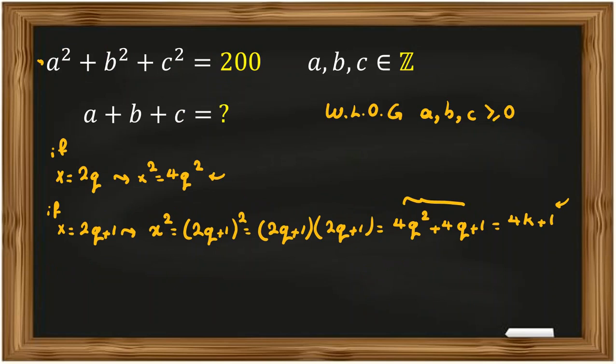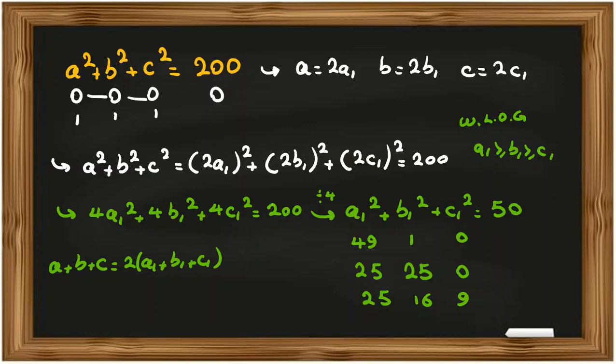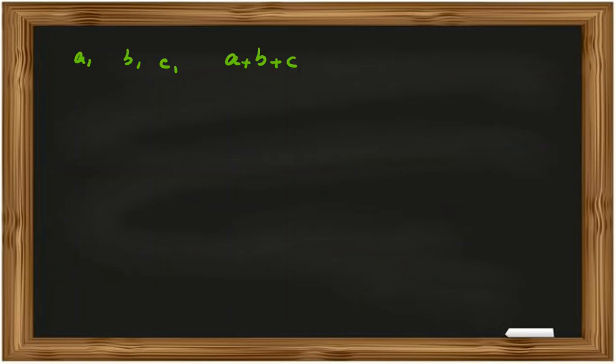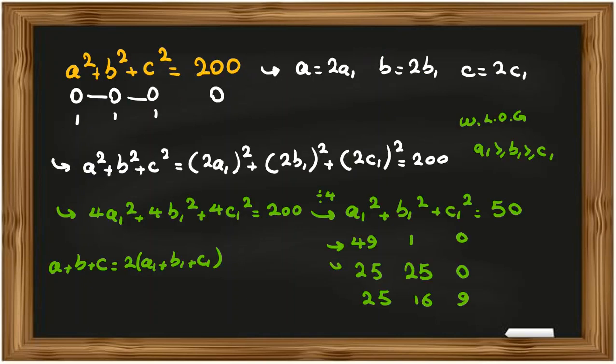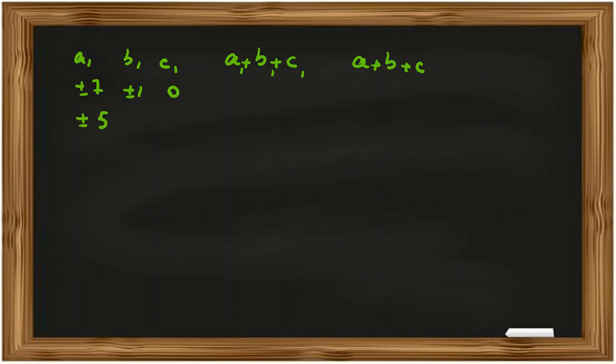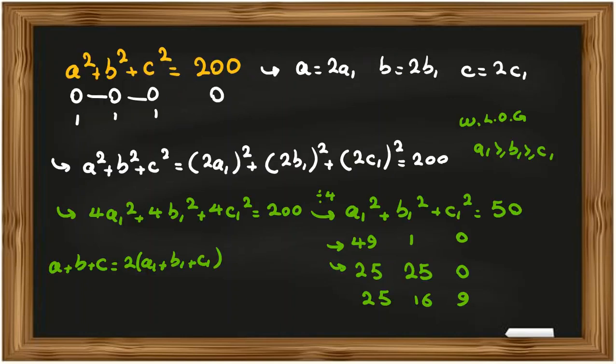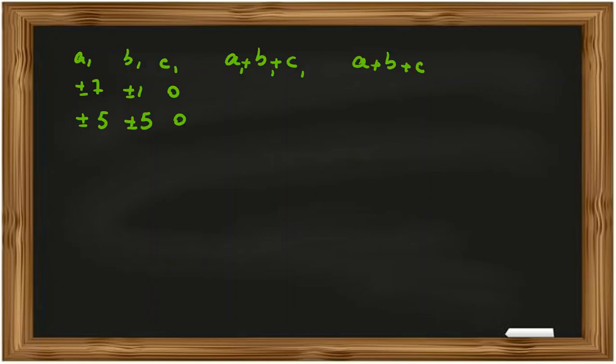The problem wants a plus b plus c, a1, b1, c1. So, let's write the case a1, b1, c1. If we want to write all possible cases for a plus b plus c, in the first case, plus minus 7, plus minus 1, plus minus 0. So, plus minus 7, plus minus 1, 0. And here, we consider a1, b1, c1, and then a plus b plus c is twice of that. So, here, the next one, plus minus 5, plus minus 5, 0, plus minus 5, plus minus 0, last case, plus minus 5, plus minus 4, plus minus 3.